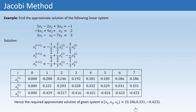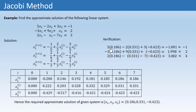We can also check whether the obtained approximate solution is correct by substituting these three values into the original equations and verifying that the left-hand side equals the right-hand side. For the first equation, 5X1 − 2X2 + 3X3 equals −1.001, which is approximately −1. Similarly, the second and third equations are also satisfied, so we can say the solution obtained is a good approximate solution.